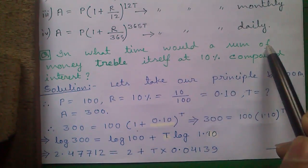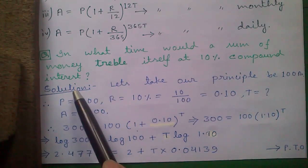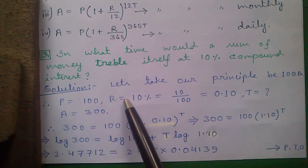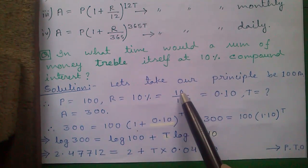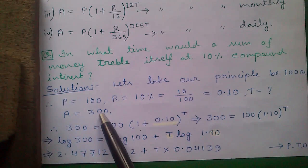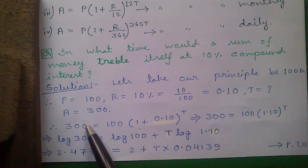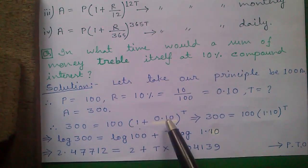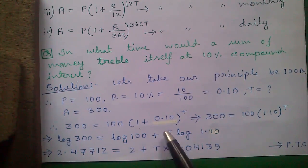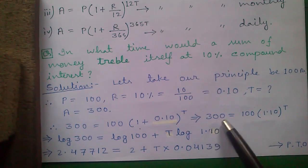Let's take a question: in what time would a sum of money triple itself at 10% compound interest? Let P = 100 rupees. R = 10% per annum = 0.10. T is what we need to find, and A = 300 since it will triple. Putting into the general formula: 300 = 100 × (1.10)^T. To remove the power T, we take log of both sides.